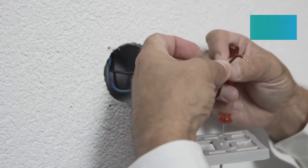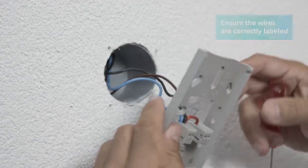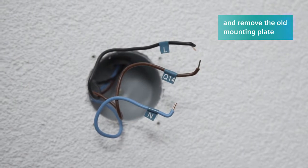Mark the wires with an L for live and an N for neutral. Remove the mounting plate of the old thermostat.